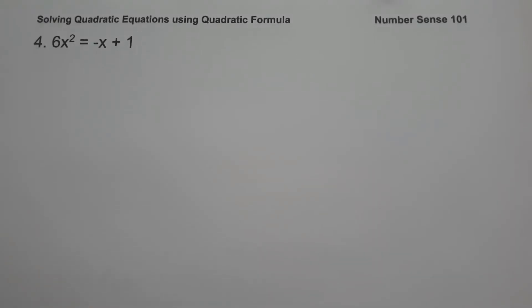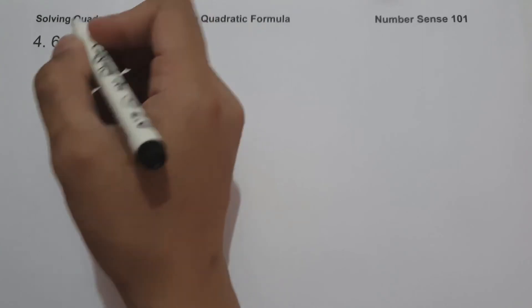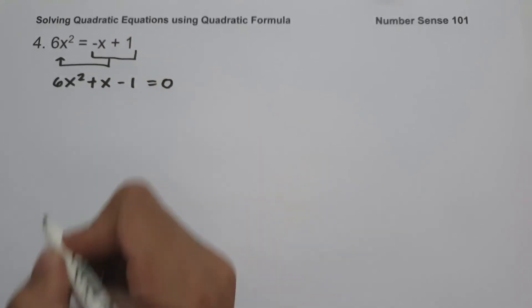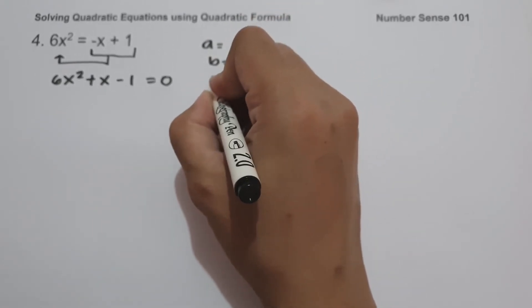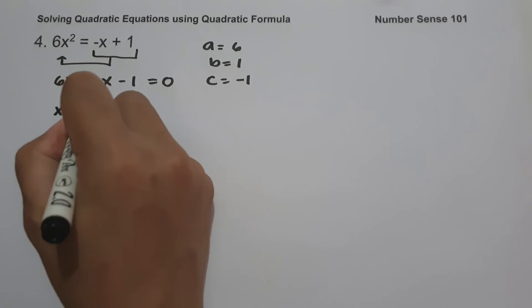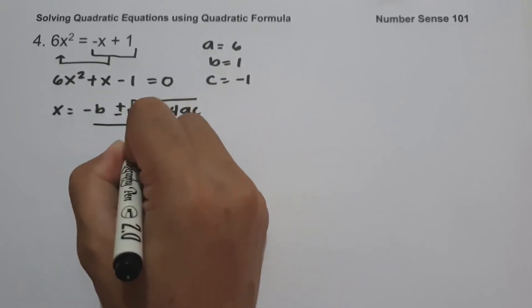On our last example, we have 6x squared equals negative x plus 1. As you can see, the given equation is not written in standard form. The first thing we are going to do before we identify the values of a, b, and c is to write this equation into standard form. Let us move negative x and positive 1 to the other side: 6x squared plus x minus 1 equals 0. So the value of a is 6, b is 1, and c is negative 1. The quadratic formula is negative b plus or minus square root of b squared minus 4ac, all over 2a.